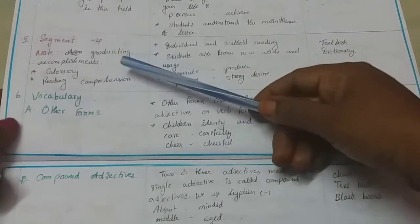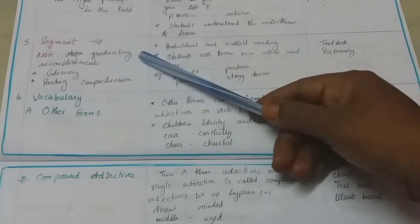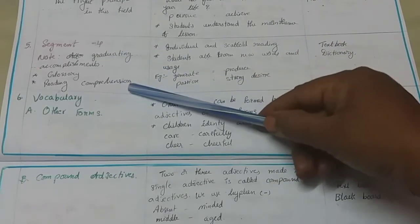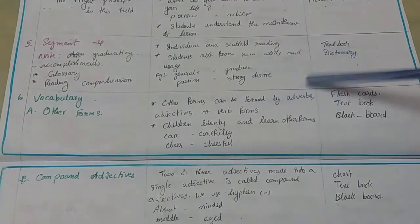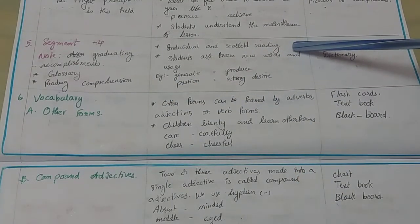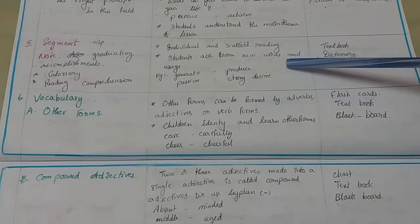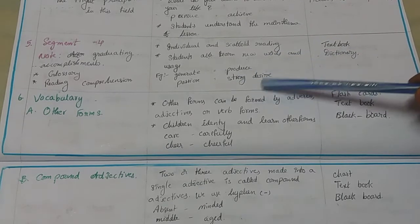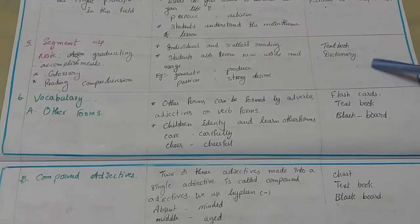In period 5, segment 4, we cover the lesson from 'after graduating' up to 'accomplishments.' After this segment, we will explain the glossary and give question and answers, completing the reading comprehension. Individual and scaffold reading by students with teacher and student interaction. Students learn new words and their usage, for example: generate (produce), passion (strong desire). TLM: textbook and dictionary.